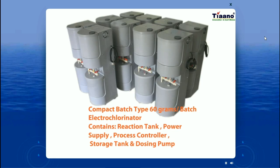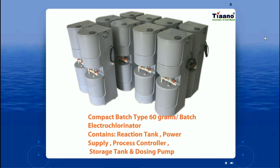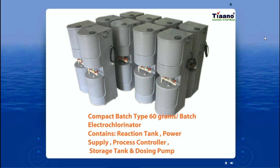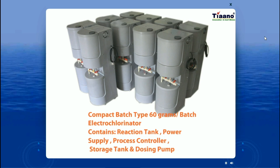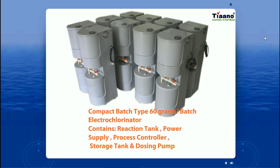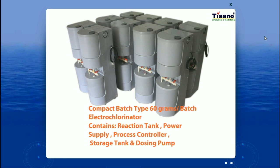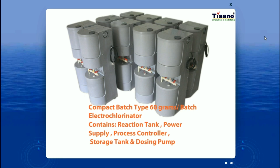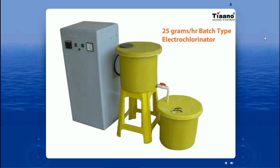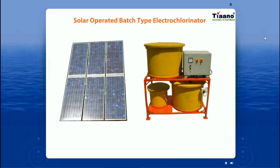Our compact chlorinator is one of the smallest batch-type units, producing 60 grams of chlorine capable of disinfecting 30,000 to 50,000 liters of water. Salt and water are put in the top chamber, power is switched on, and in eight hours the sodium hypochlorite produced is transferred to the bottom tank, from where it is dosed by a dosing pump. Batch process electrochlorinators can produce up to 400 grams per hour of chlorine. In remote areas without electricity, the electrochlorinator can be operated using solar power.